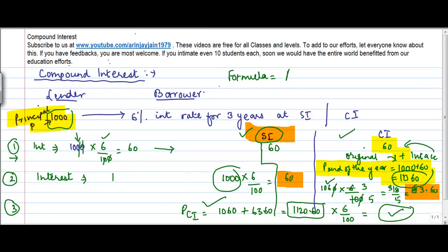The formula is that the amount at the end of n years will be equal to the principal into (1 + r/100) to the power n. So r is basically your rate of interest, n is the number of years.